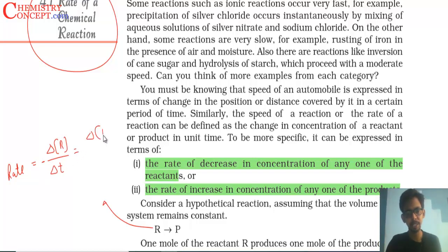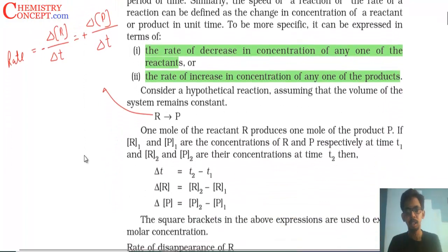And increase in concentration of product with time. In the product case there will be a positive sign, in the reactant case negative sign, because reactant concentration decreases, product increases. So how much reactant is consumed or product is formed in a given interval of time is called rate of the reaction. That's it.